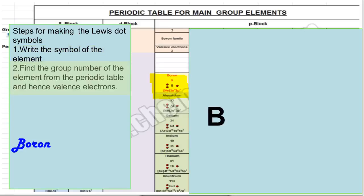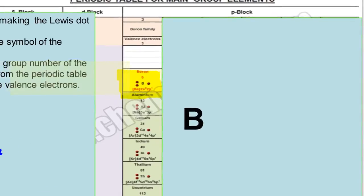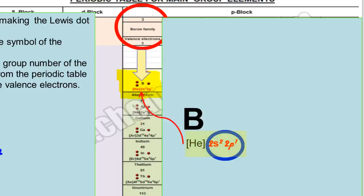Second step is to find the group number of the element from the periodic table. Boron is in group number 3, so its valence electrons are 3. We can predict its valence electrons with the help of electronic configuration also. It has 3 electrons in the outermost shell, so valence electrons of boron are 3.